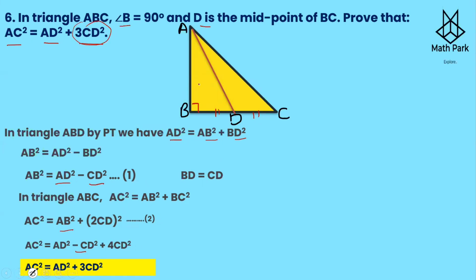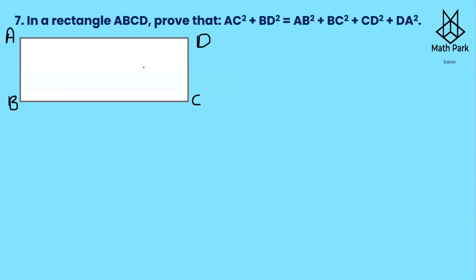So what we focus on is what is given and what is to be proved. By Pythagoras theorem, whatever we have on the left and right hand side, we should be left with 3CD². Whatever parts of BC are there, we write them all in terms of CD — that should be our target.